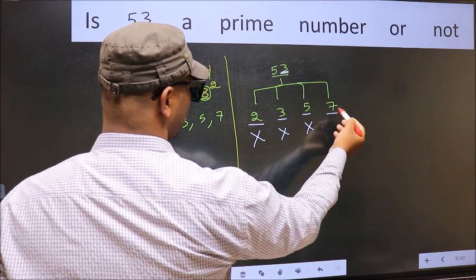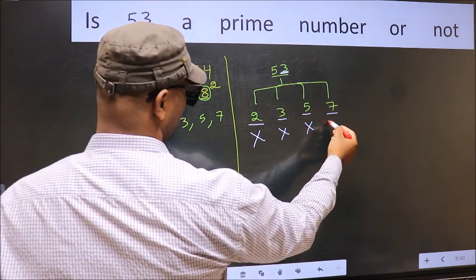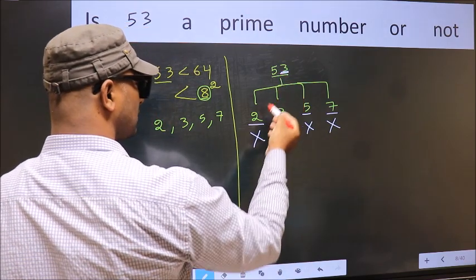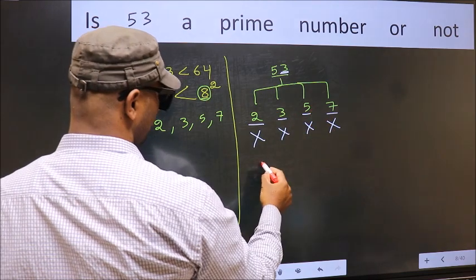Next, number 7. 53 is not divisible by 7. So, now 53 is not divisible by any of these numbers. Hence,